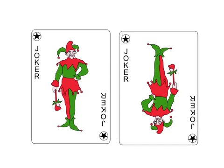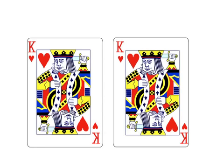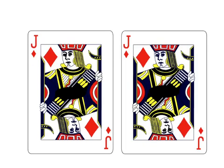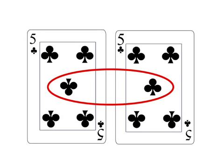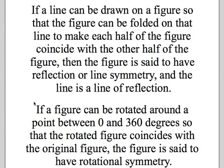But take a look at this joker — when it gets rotated, the joker is upside down in the image. The king, I believe, has rotational symmetry. Same with the jack of diamonds. But when we do the five of spades, look at those two spades in the center — they don't coincide. So the five of spades does not have rotational symmetry. If a line can be drawn on a figure so that the figure can be folded on that line to make each half coincide with the other half, then the figure has reflection or line symmetry, and the line is a line of reflection. If a figure can be rotated around a point between 0 and 360 degrees so that the rotated figure coincides with the original, the figure has rotational symmetry.